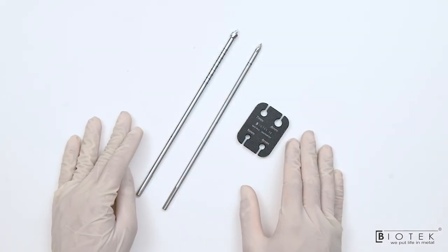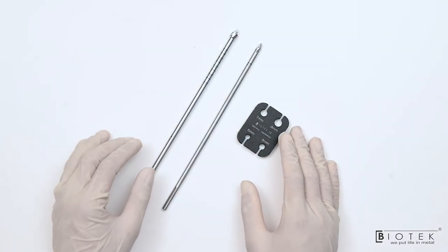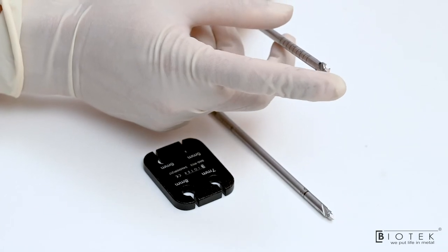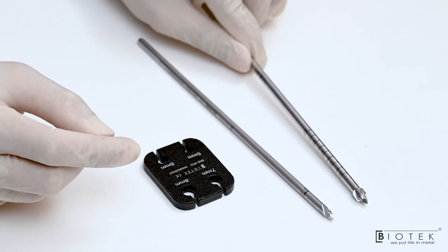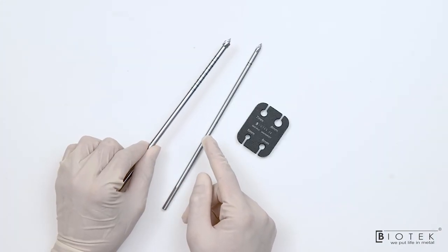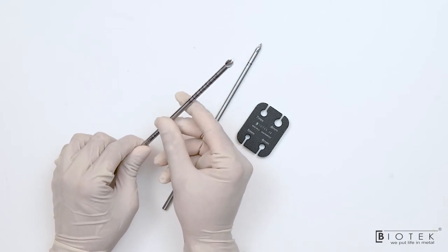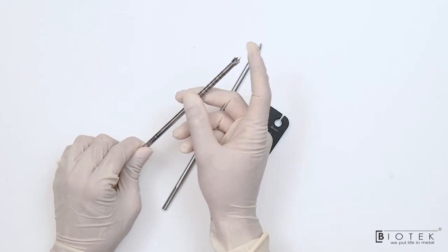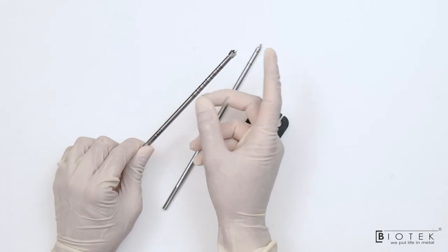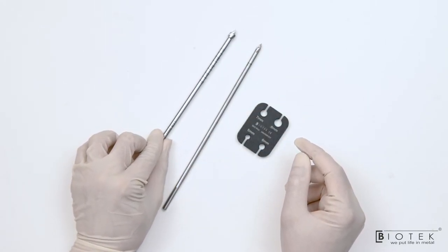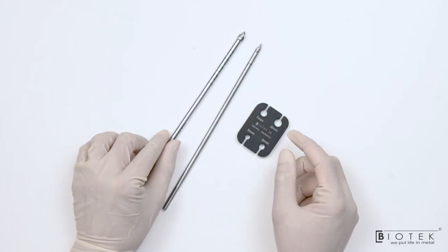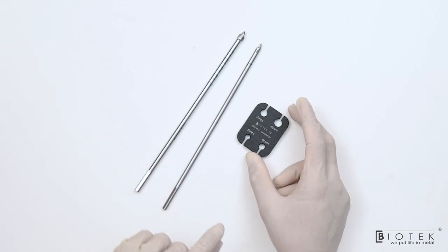These instruments are used for biceps tenodesis. This reamer is known as fluted tenodesis reamer which is available in 5, 6, 7, and 8 mm. These are not cannulated. It has a sharp tip so that it can be used without guide wire. It is used for insertion of Rimfix Tenomicki suture anchor for biceps tenodesis.